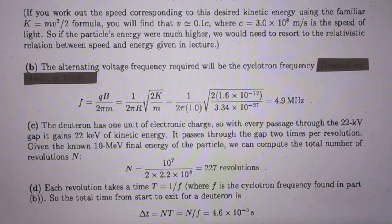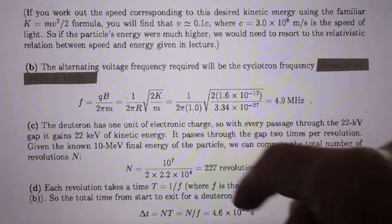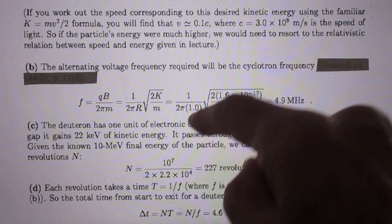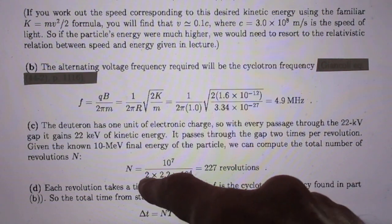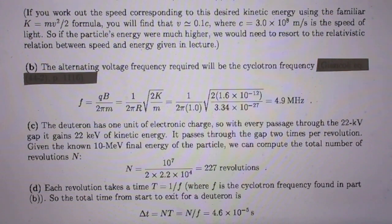Given the known 10 MeV final energy of the particle, we can now compute the total number of revolutions. It's 10 to the seventh, which is the 10 MeV. The 2 is because it goes through twice, and the 2.2 times 10 to the fourth is the 22 kilovolts, kilo electron volts.